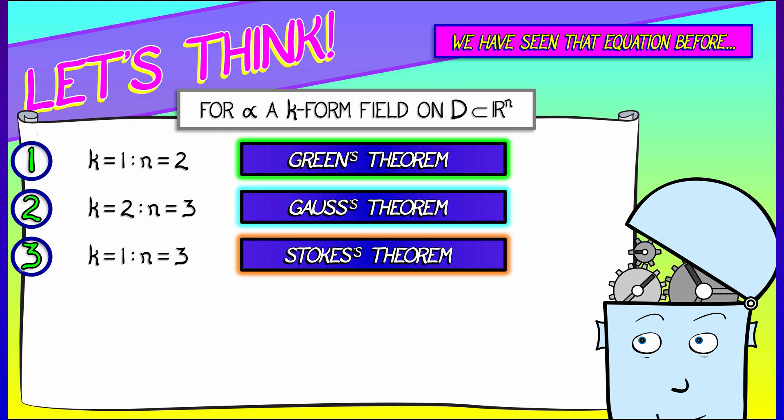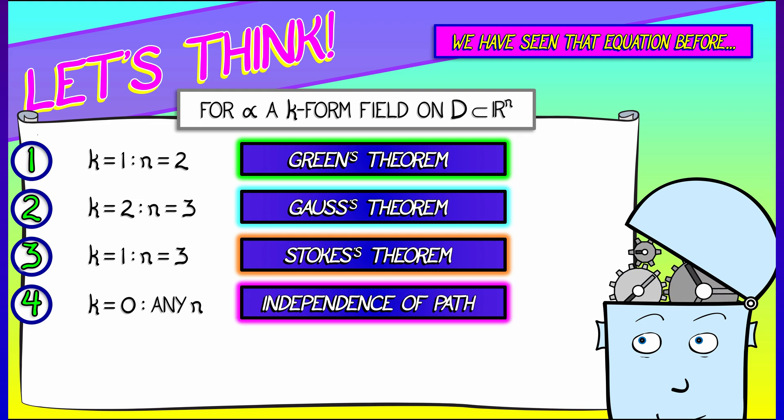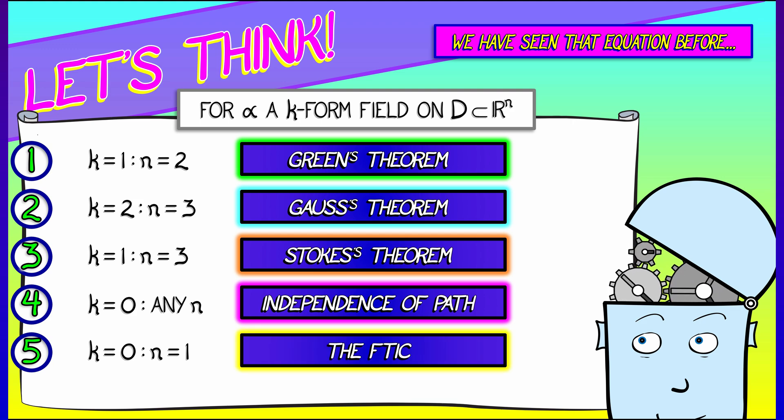But wait, there was another theorem, a pretty special theorem, the independence of path theorem that is really the generalized Stokes' Theorem when k equals 0 and n is whatever. It works in all dimensions. In particular, it works in dimension 1. And that very special case where k equals 0 and n equals 1 is what? It's the fundamental theorem of integral calculus.